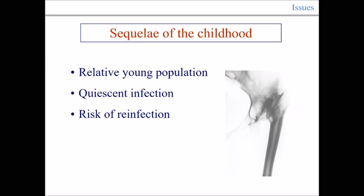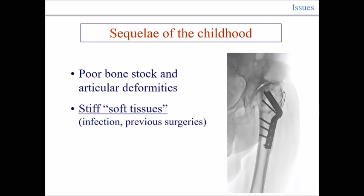We have a relatively young population, and this is an issue. We have the possibility of a quiescent infection, and all surgeons are afraid about this because of the risk of reinfection. We have poor bone stock. We have vertical deformities, both coming from the infection and from previous surgery. The very difficult part of the procedure can be the stiffness of the soft tissues, which can be very pronounced because of scar from previous surgery and from the previous infection.